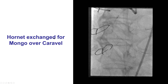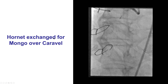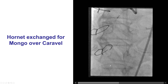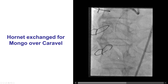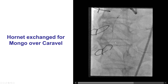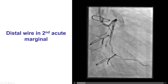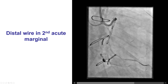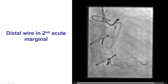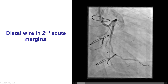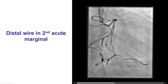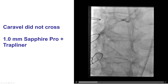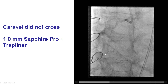The Hornet was then exchanged for a Mongo guide wire over a Caraval microcatheter, and that seemed to advance along the anticipated course of the right coronary artery. However, the wire then stopped going in the same course and seemed to be going on the lateral wall — it turns out that the wire went into a second acute marginal branch.